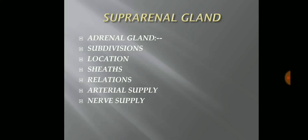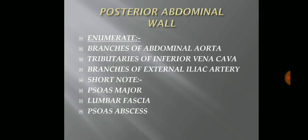Suprarenal gland — also known as the adrenal gland. Topics include: subdivisions, location, relations, arterial supply, and the nerves of that. Generally a long question is asked on this. Posterior abdominal wall: the enumerate questions include branches of the abdominal aorta — most important — tributaries of the inferior vena cava, and branches of the external iliac artery, which is lesser important. Short notes on psoas major, lumbar fascia, and psoas abscess are also lesser important.